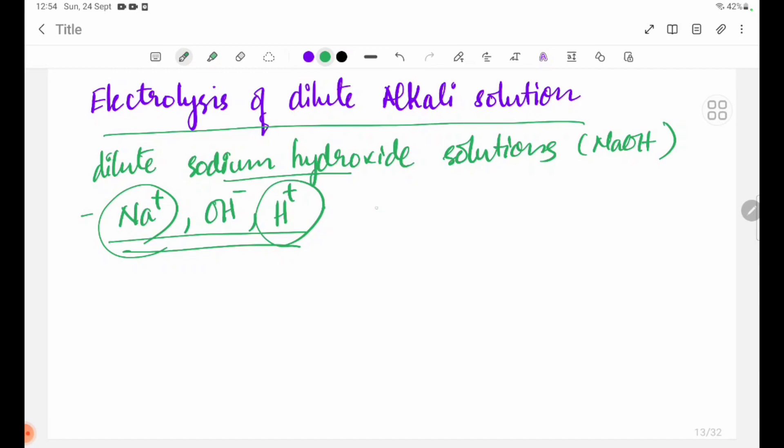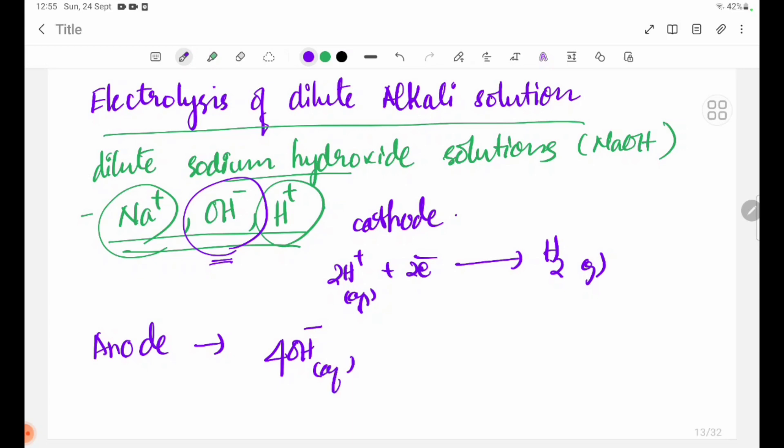At the cathode: 2H plus plus 2 electrons forming H2 gas. At the anode: 4OH minus ions forming 2H2O plus O2 gas plus 4 electrons.